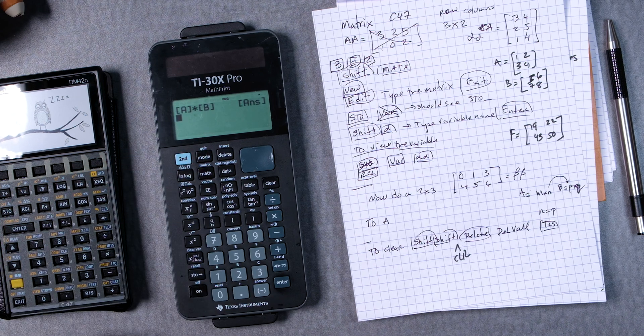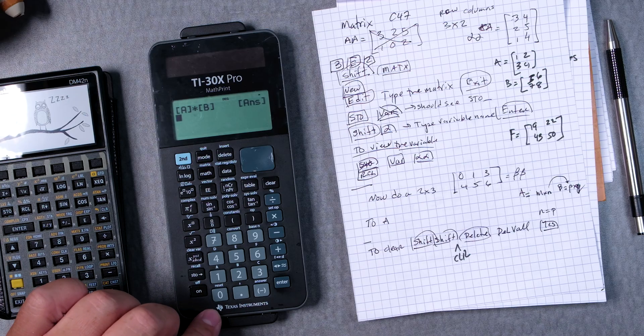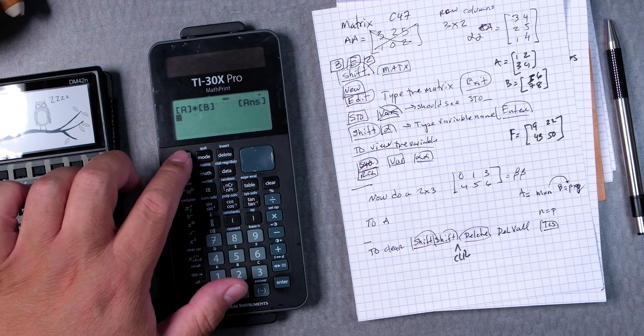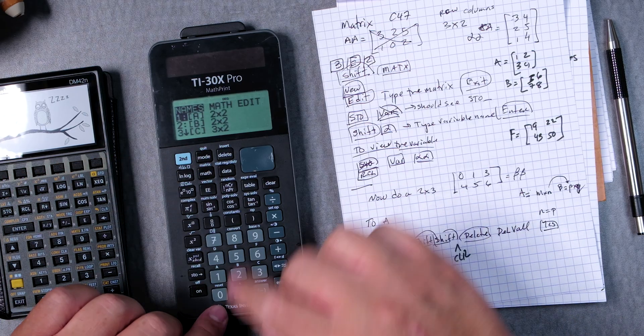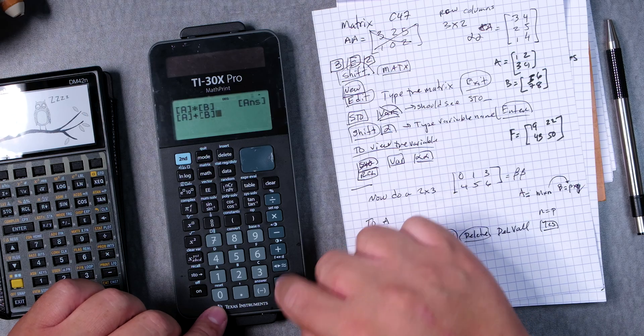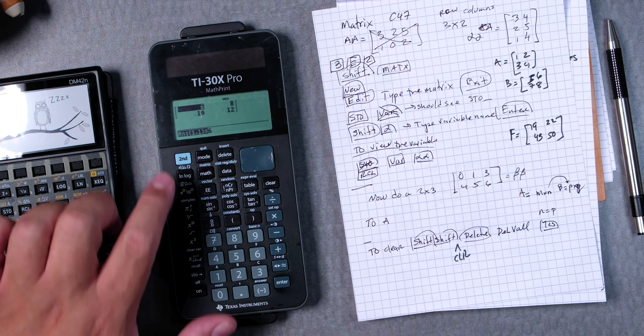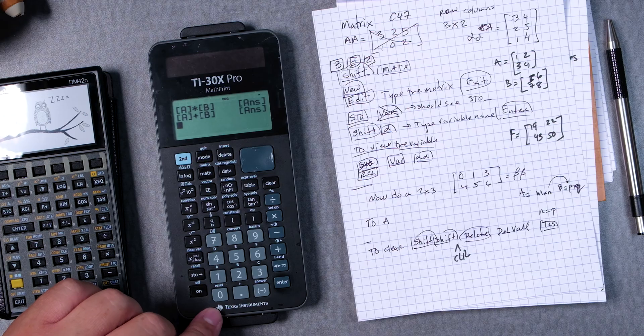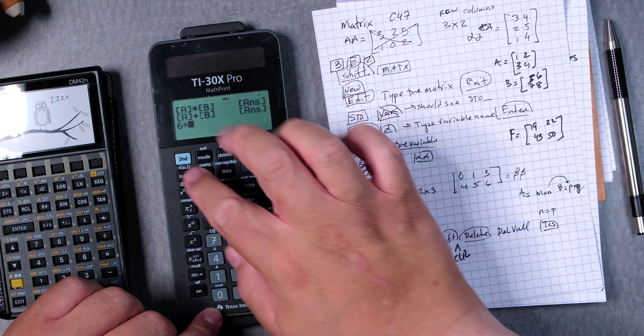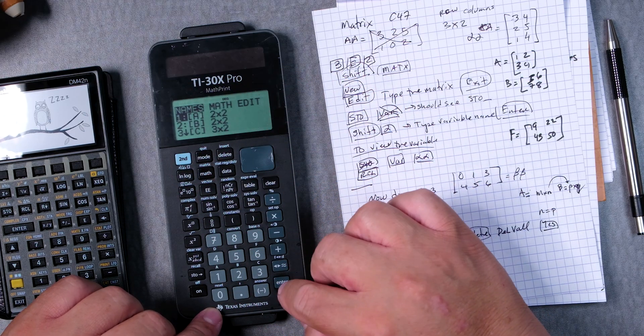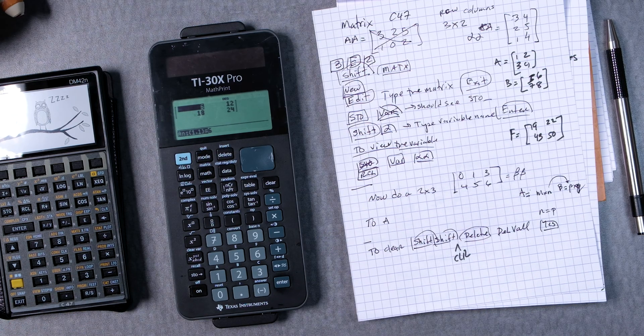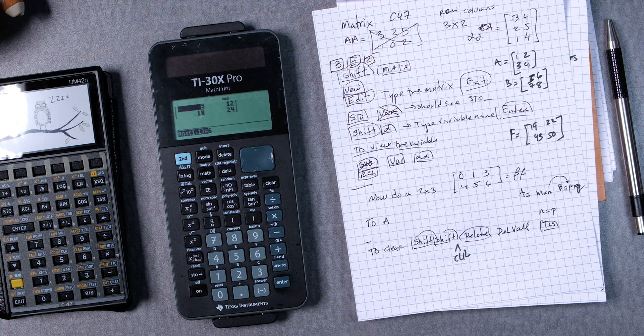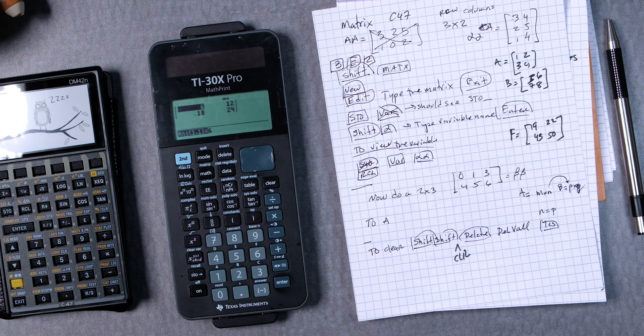That'll be a different video. But for now, you know how to enter, you know how to multiply, and you can also add if you wanted to. Second matrix A plus second matrix B gives you the addition. And you can also multiply a constant to one of the matrices. You see that? So that gives you an idea of how to multiply, add, and multiply a constant to a matrix.